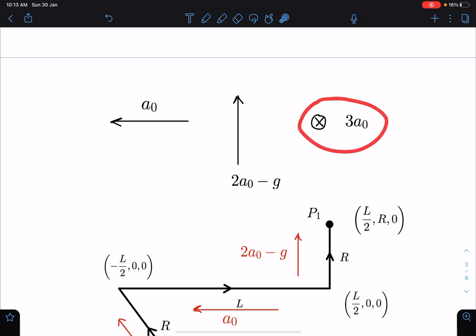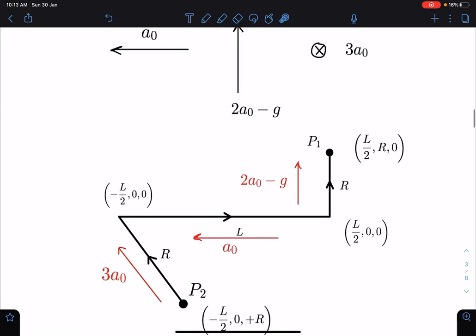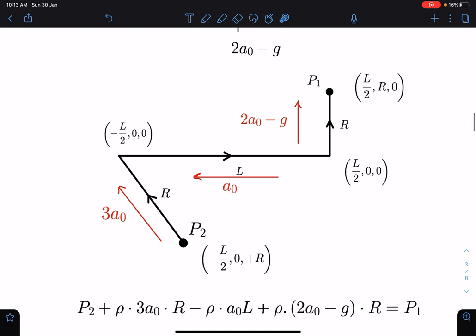and into negative z it is 3a₀. So from P₂ I'm moving towards P₁ and I'll use the concept that in the direction of effective gravity, pressure increases. We can choose any path, so best is this: along -z we are going so here pressure is increasing, and then we are going here pressure is decreasing, and further pressure is increasing.